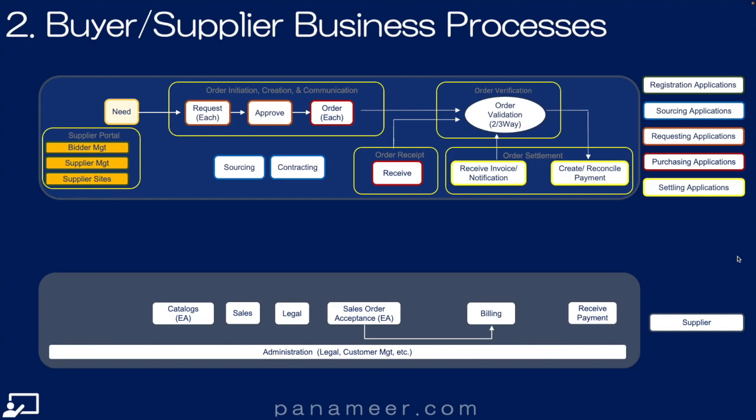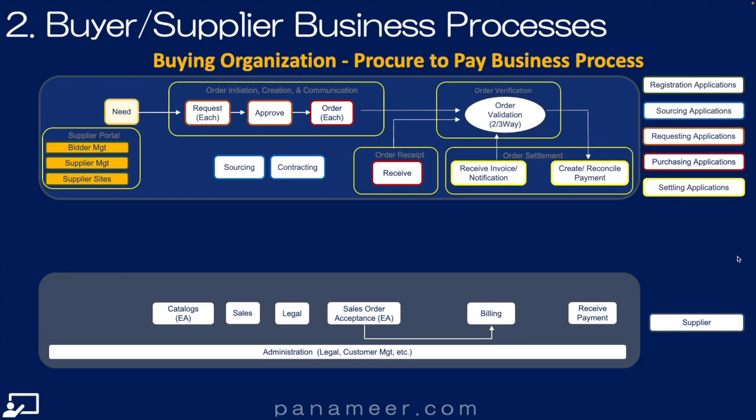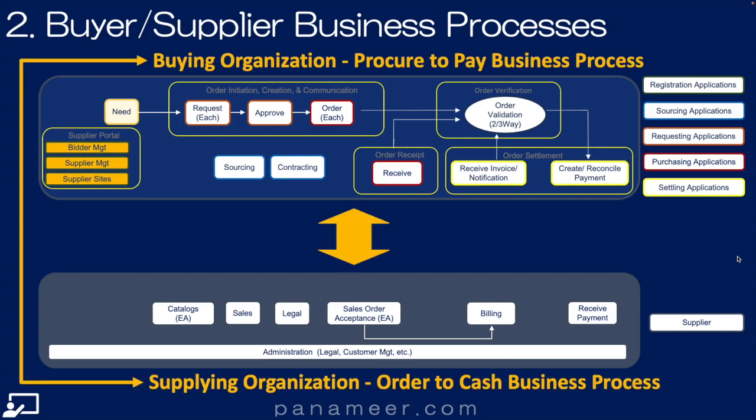Slide 2: Buyer-supplier business processes. This slide shows how the buyer and seller's business processes work together. This is the procure-to-pay process, and here is its reciprocal supplier order-to-cash process.